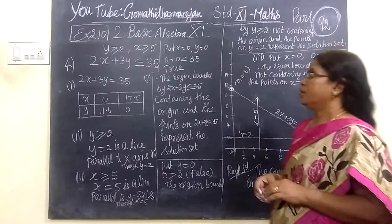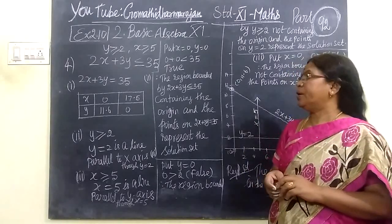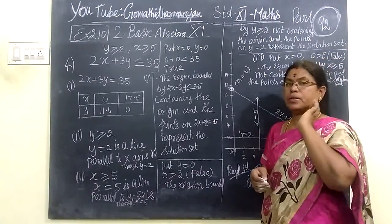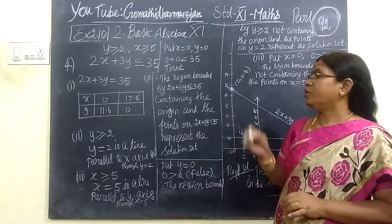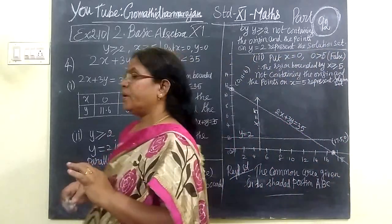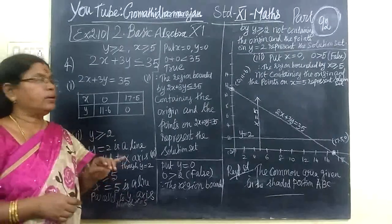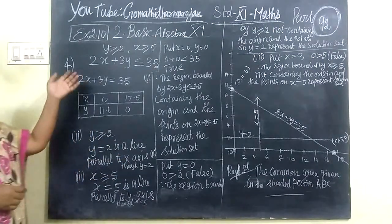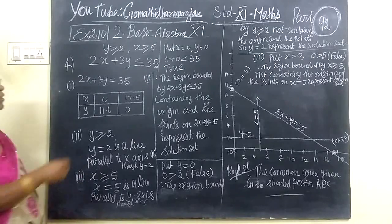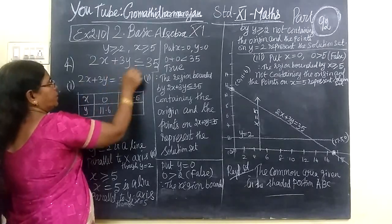We are now at Lung Center General Max, Posture 92X2.10 Basic Algebra. We have seen up to 5 questions, and now we are on the 4th question. Here we are given 3 inequalities to create.